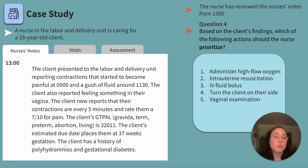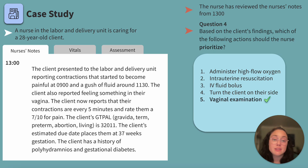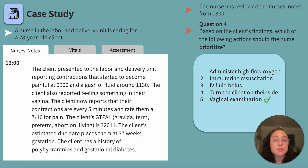A lot of these seem like important and impactful actions, but there is one best option. If you said vaginal examination — great. Administering high-flow oxygen and IV fluid bolus are both great actions that help deliver oxygen and blood flow to the baby, but remember we're looking for the most important action. Intrauterine resuscitation — typically administering fluids through a catheter placed in the uterus through the cervix — would be contraindicated with a suspected cord prolapse.